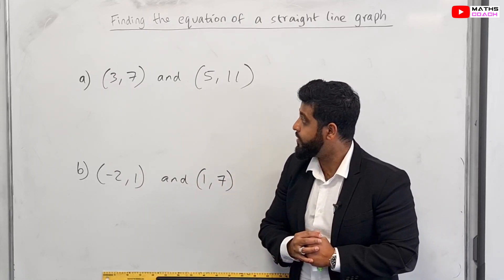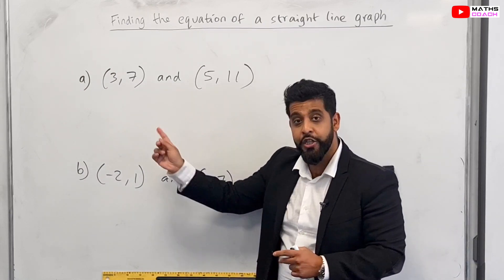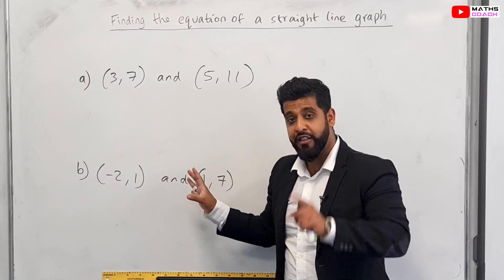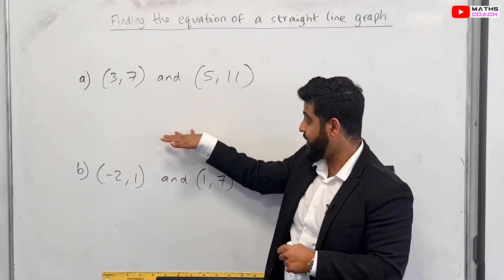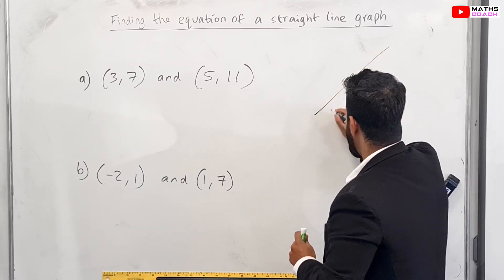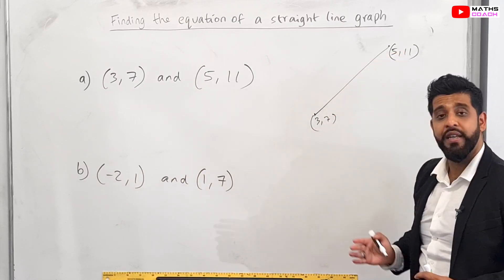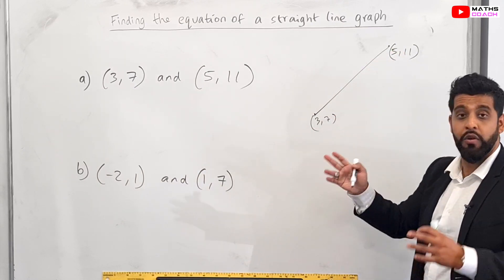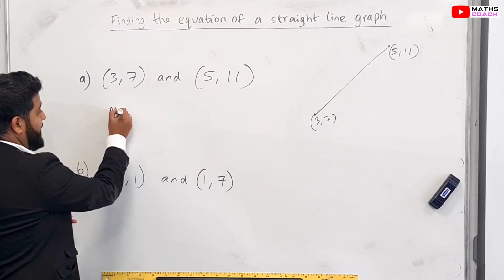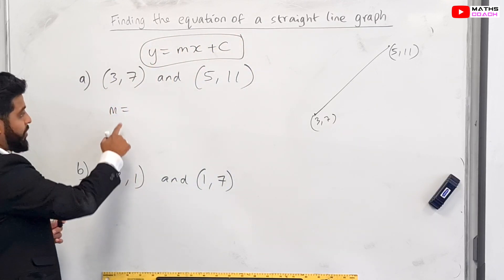Now let's look at the next two questions, which are slightly different because they don't have the graph drawn — we just have two coordinates. We'll find the equation of the line that goes through (3, 7) and (5, 11), and you can try the second set of coordinates yourself after watching me. Visually, you're just going to have a straight line through (3, 7) and (5, 11), and we are finding the equation of that line. We can draw the right angle triangle as before, but let's go straight into the calculation — finding m, the gradient.